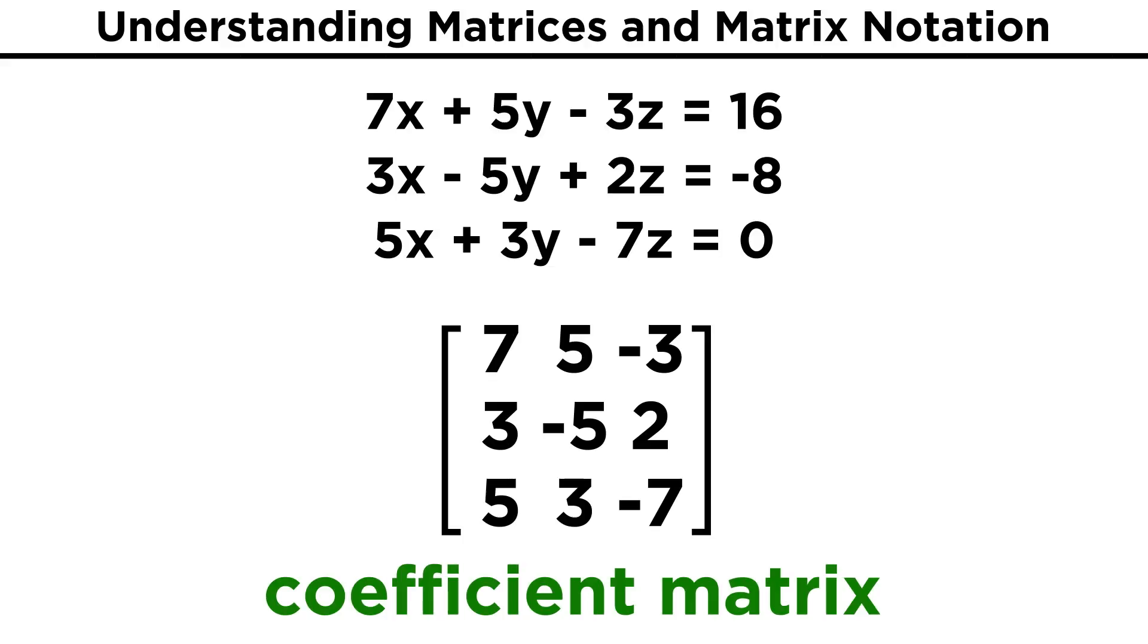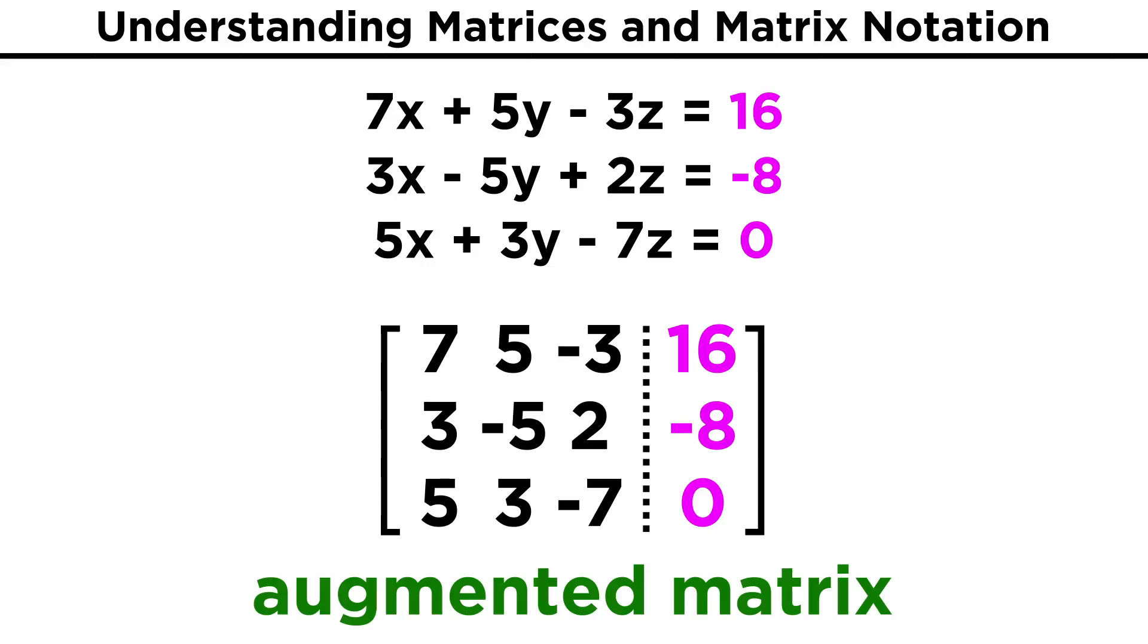To get a matrix that contains all of the information from the system, we need to add one more column on the right side, which will contain the numbers on the right side of the equals sign for each equation, and this is now called an augmented matrix, which may or may not have a dotted line here to separate this last column from the coefficients.